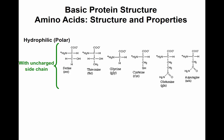Glutamine and asparagine are polar because of having a double bond with oxygen and an amine group. They can be precursors to glutamic acid and aspartic acid. If you add acid or alkaline with heat, they will lose an amine group through deamination, and the amine group becomes a carboxyl group. Glutamine in the presence of acid or base with heat undergoes deamination and becomes glutamic acid; asparagine similarly becomes aspartic acid.